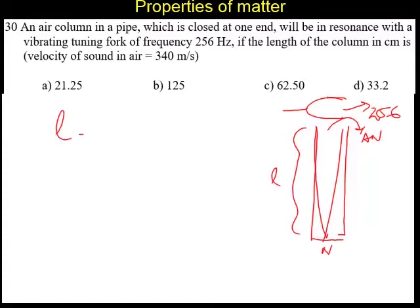The length of the air column is equal to lambda by 4 because this is a lambda. So, L is lambda by 4 or lambda is 4L.